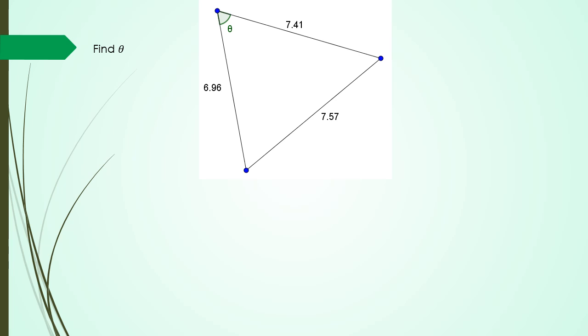The best way to go about this: first step is always label your sides and angles. In this one, I'm going to call theta as angle A, which means my side opposite is going to be little a, and my two sides are going to be b and c.